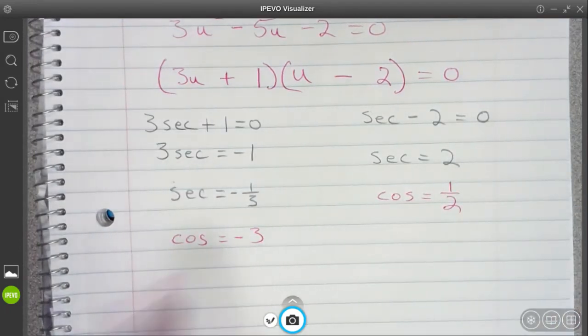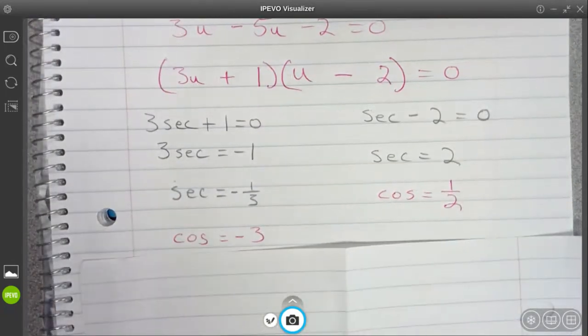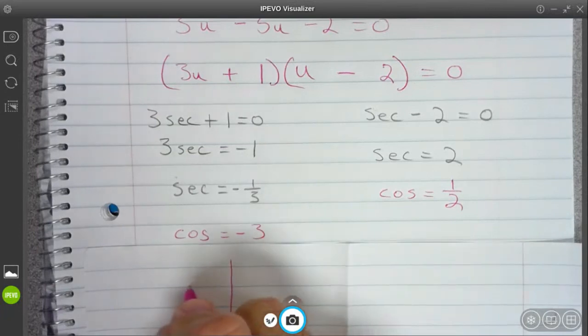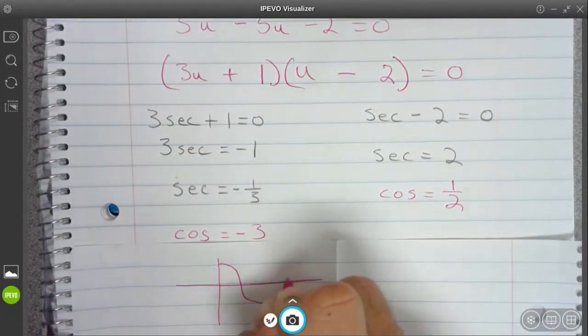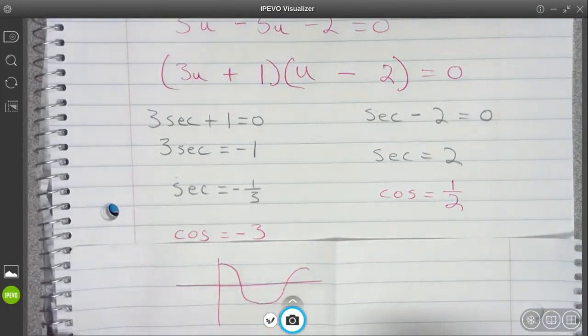Now this one, that one's impossible. All right, the graph of cosine. If you remember, the graph of cosine looks like this right here. This goes over and over and over.